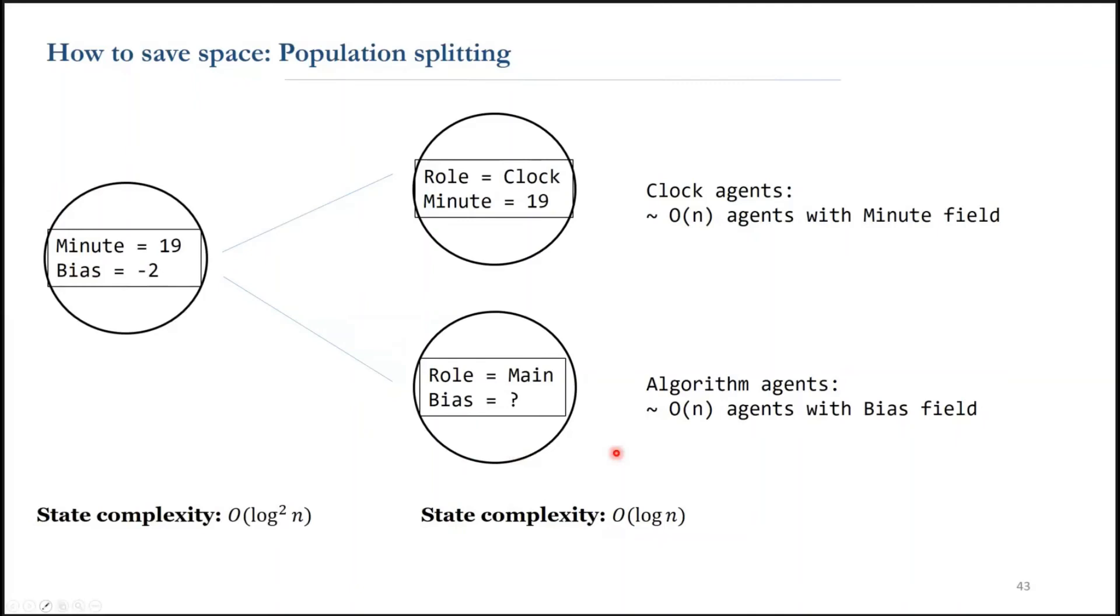Why is this working? Because if we guarantee that there are linear agents in each subpopulation, the interaction between these two groups will happen in constant time.